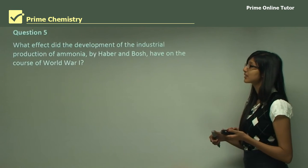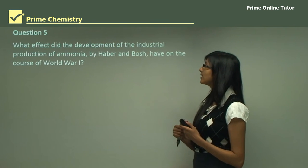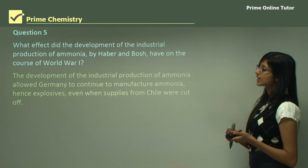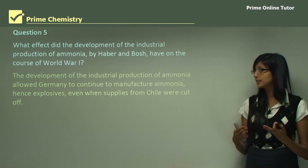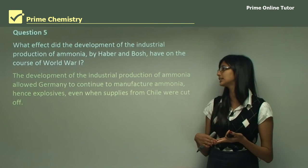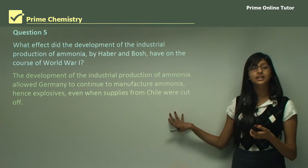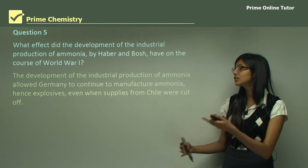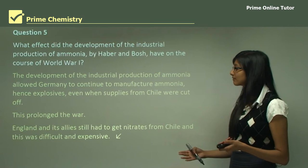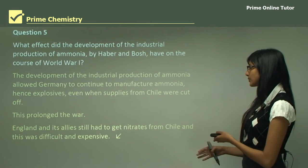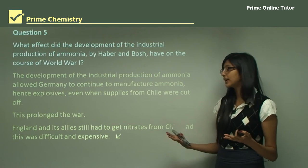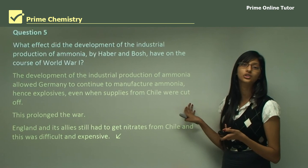Question 5: What effect did the industrial production of ammonia by Haber and Bosch have on the course of the war? The development allowed Germany to continue manufacturing ammonia, leading to continued production of explosives even when supplies from Chile were cut off by Britain. Germany did not fall back in the war and continued producing explosives, prolonging it. Meanwhile, Britain and its allies still had to get nitrates from Chile, which was difficult and expensive, giving Germany a significant advantage.